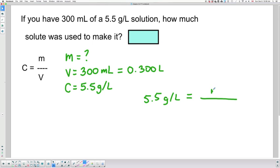Okay, so I'm looking for the mass of solute and I know that my volume is 0.300 liters if this was over 1. Right, so all I need to do now is cross multiply to find my mass. So 0.3 times 5.5 divided by 1 will give me my mass and my mass should be in grams because my liters are canceling out. So my mass will be expressed in grams.